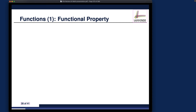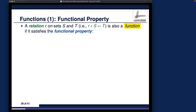The final part of the review is about functions, which is a special kind of relation. Let's see what it really means for a relation to satisfy the so-called functional property. A relation r on sets S and T — you can see the relation symbol — you know how to rewrite this in terms of the power set of cross products. R is a relation between S and T, and r is also a function if it satisfies the following functional property.